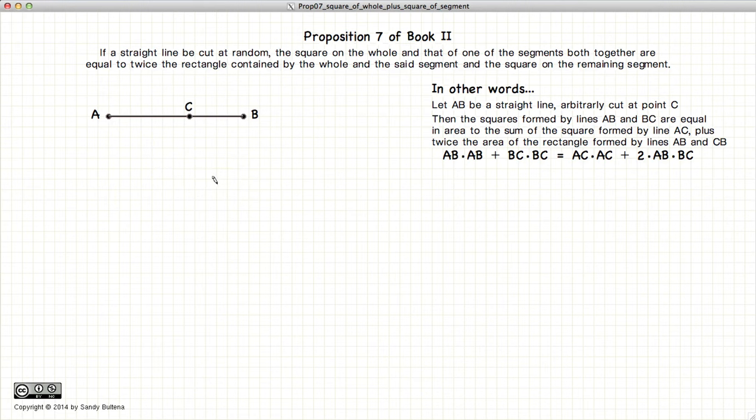Now if we look at it algebraically, what this proposition is saying is AB squared, which would be X plus Y all squared, plus BC squared, which is simply Y squared,